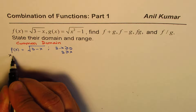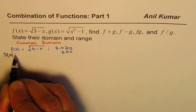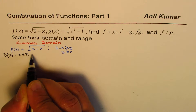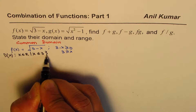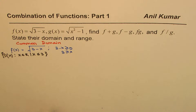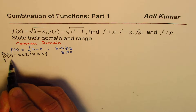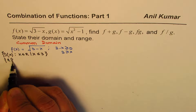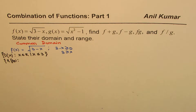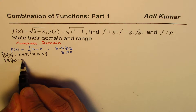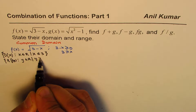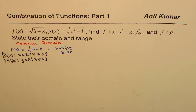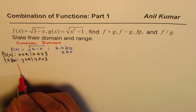The domain of f of x is x belongs to the real numbers where x is less than or equal to 3. As for the range, the function is always positive or zero — at x equals 3, the value is 0. So y belongs to real numbers where y is greater than or equal to 0. That is the range of the given function. Now, to sketch the function and perform these operations, we need some values, so let me create a table.